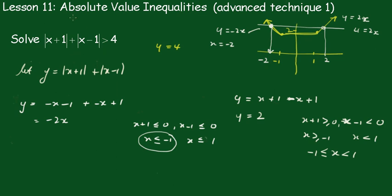And we're saying this is always going to be bigger than 4 and that will occur here and over here. And so the final solution is that x is going to be greater than 2 or x is going to be less than minus 2, is our final solution.